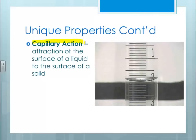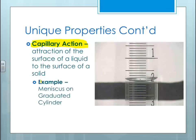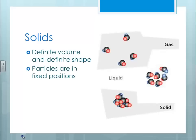Another unique property is capillary action, and we've seen this when we've measured the graduated cylinder. This is the attraction of the surface of a liquid to the surface of a solid. This is why when we read the graduated cylinder, we have to read the meniscus — the liquid particles on the edge are a little bit more attracted to the solid, pulling them up on the edge, which creates that dip in the middle. That's why we read the bottom of the meniscus.